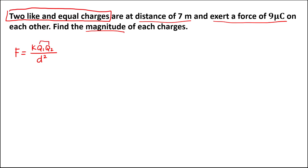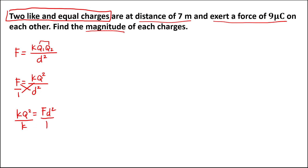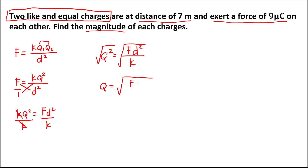Since from this problem we have two like and equal charges, these two charges are equal. So we can rewrite this formula as k times q squared over the distance squared. Then to solve for q, cross multiply: k times q squared equals the electric force times the distance squared. Then divide both sides by k, so q squared equals the electric force times the distance squared all over the Coulomb's constant. Then take the square root to solve for q.